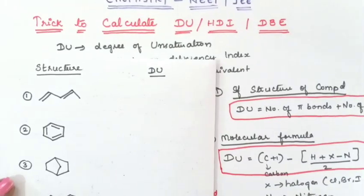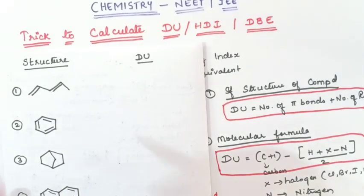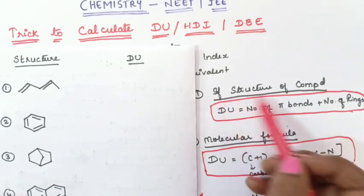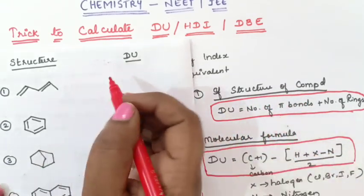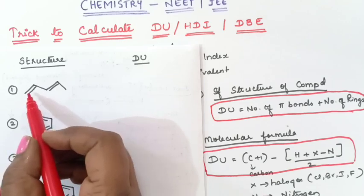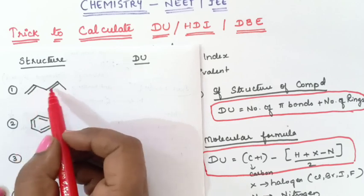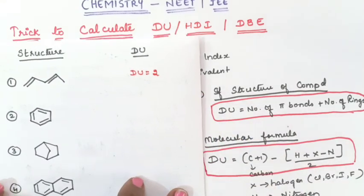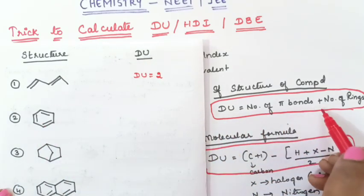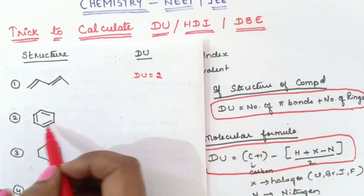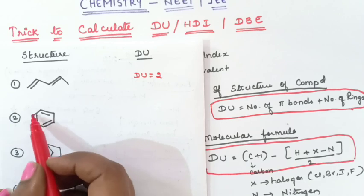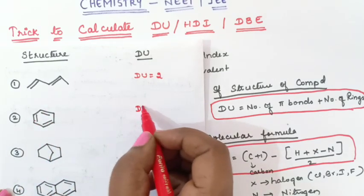Now let's take examples. For the first example, a structure is given, so we use Formula 1: DU = pi bonds + rings. Counting the pi bonds in the structure, there are two double bonds, so DU = 2. For the second example using the same formula, counting pi bonds gives 1, 2, 3 — three double bonds — plus one ring, so DU = 3 + 1 = 4.